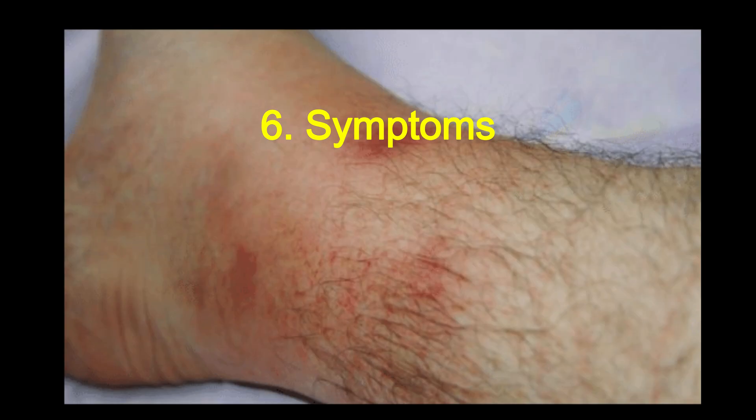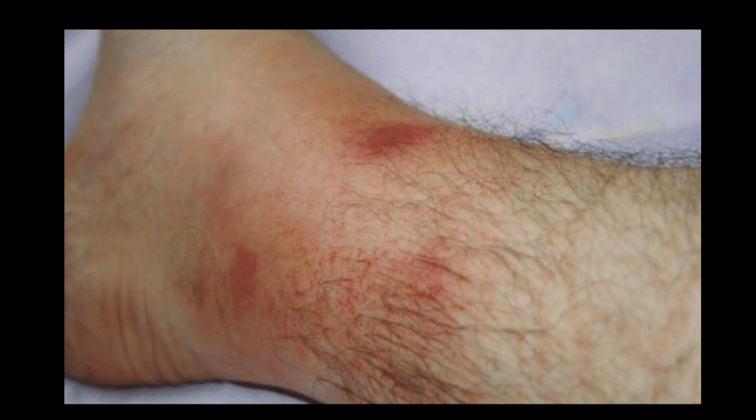Six, symptoms. Cellulitis has a gradual onset of symptoms, including tenderness, swelling, and fever. Erysipelas has a sudden onset of symptoms, often with systemic features such as fever, chills, and malaise.